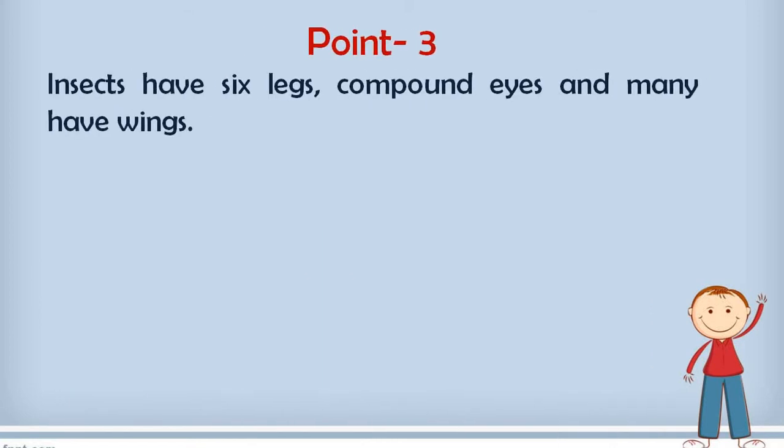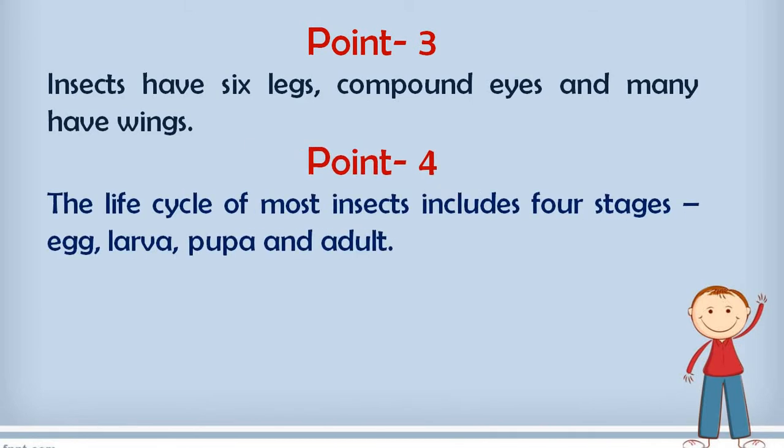Point number 3 is about the speciality of the insects. Insects have six legs. For being in the category of insect, it is always must that they should have the six legs and compound eyes. Do you remember that compound eyes are made up by many simple eyes? And many have wings. Not all the insects have wings but many insects have the wings.